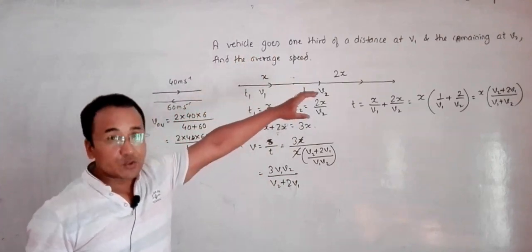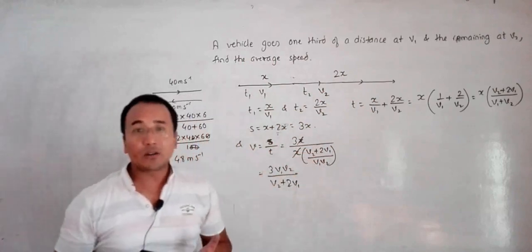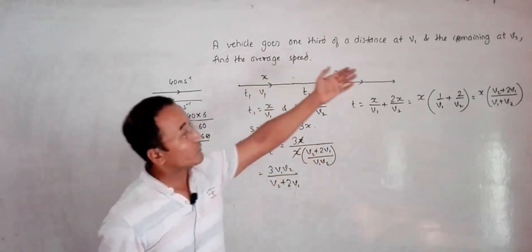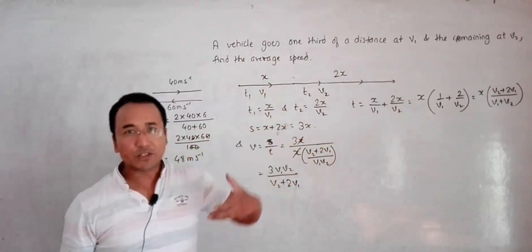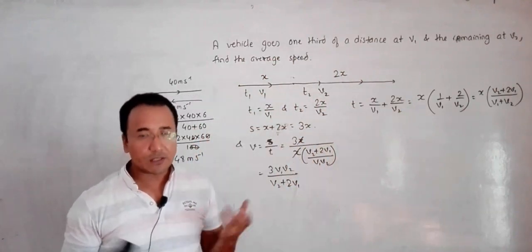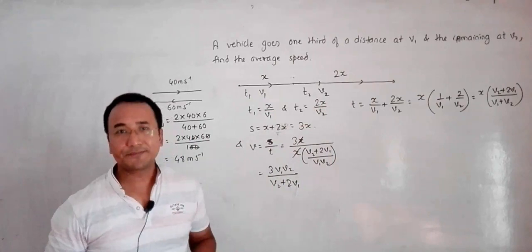In the same way, we can design other problems. For example, we can have three portions: the first one-third at v1, the second one-third at v2, and the third one-third at v3, and derive a formula from that. We can also use ratios like 2/5 or 3/5. There are several such ratio combinations we can use to find the desired average velocity according to our requirements.